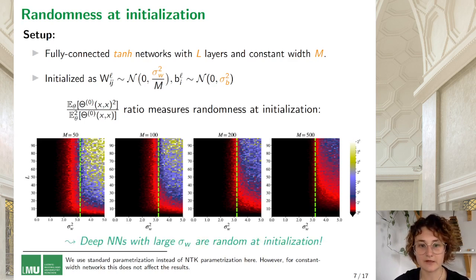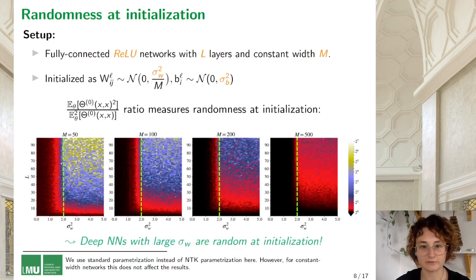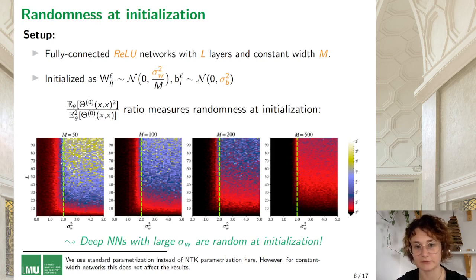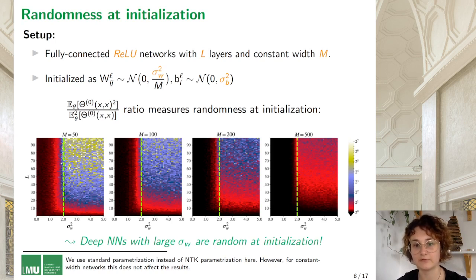Looking at the same graphs for ReLU networks, the boundary between deterministic and random NTK has shifted to the left, but the general picture still looks very similar. The dashed green line, which is close to the boundary between random and deterministic NTK in all the graphs, is theoretically computed and has an interpretation as the boundary between vanishing and exploding gradients.